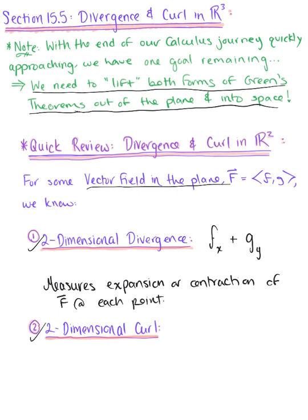With two-dimensional curl, we know that this is defined as the partial derivative of G with respect to x minus the partial derivative of F with respect to y.